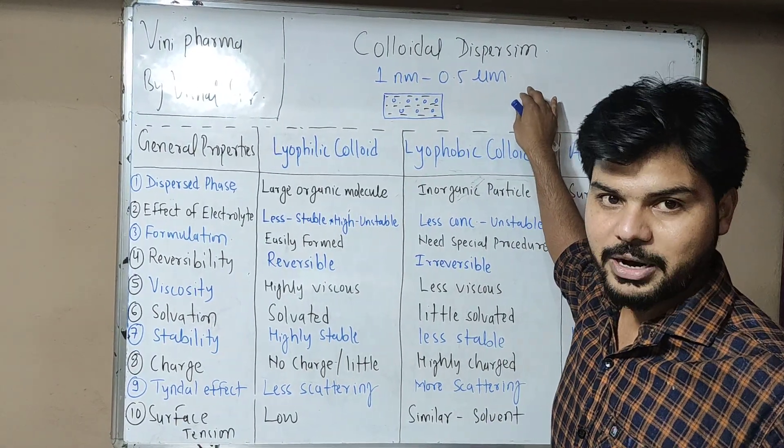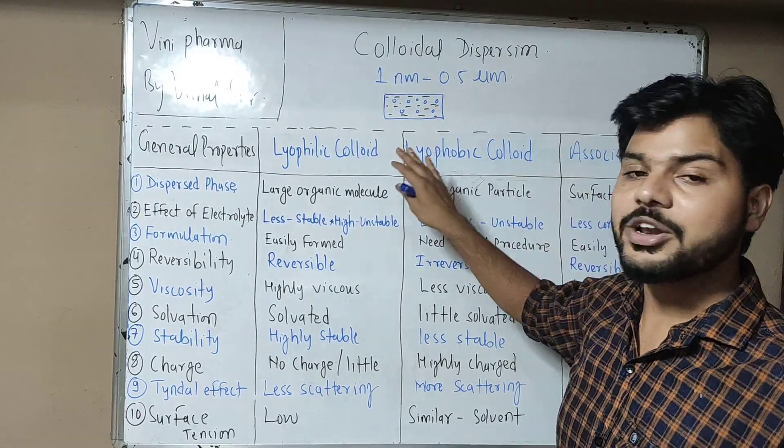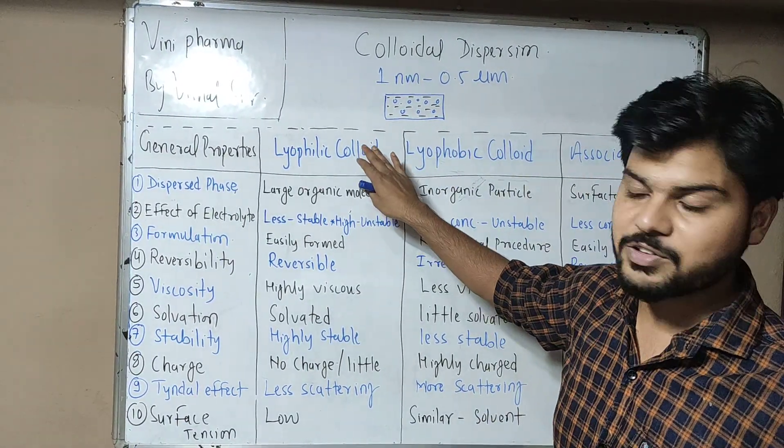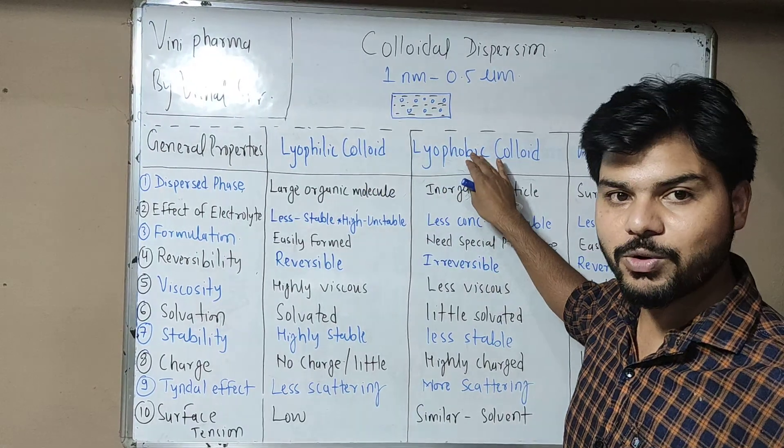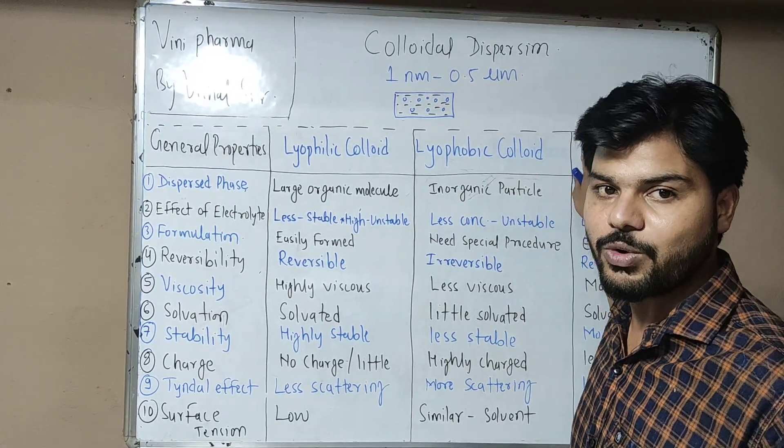How many types of colloidal system are categorized? There are three categories of colloidal system: lyophilic colloid, lyophobic colloid, and association colloid.